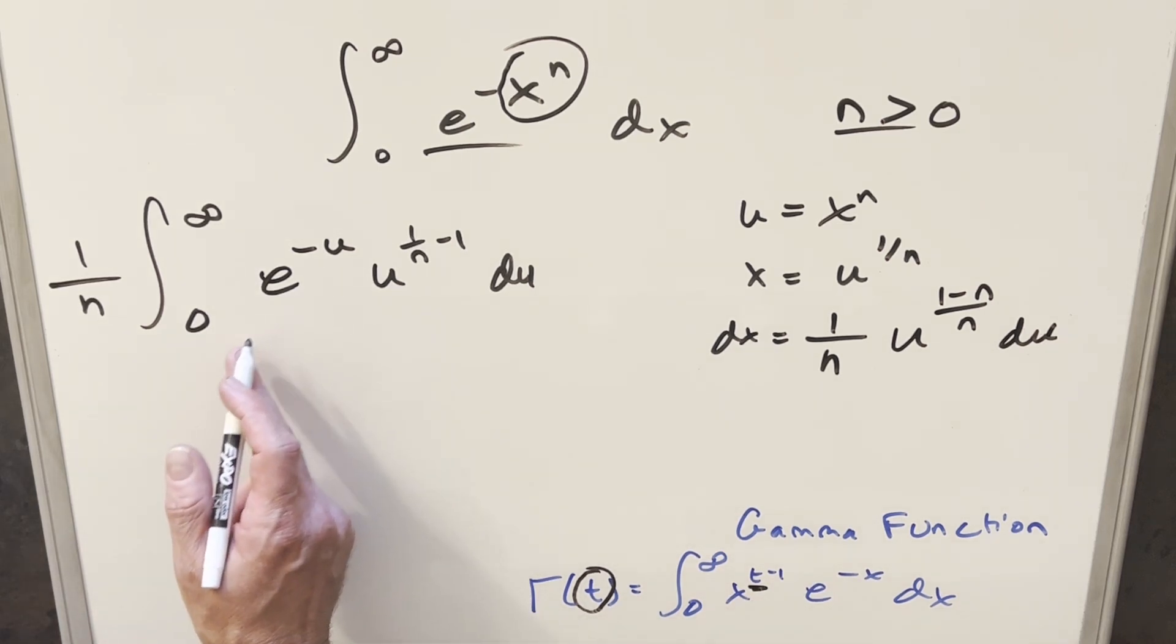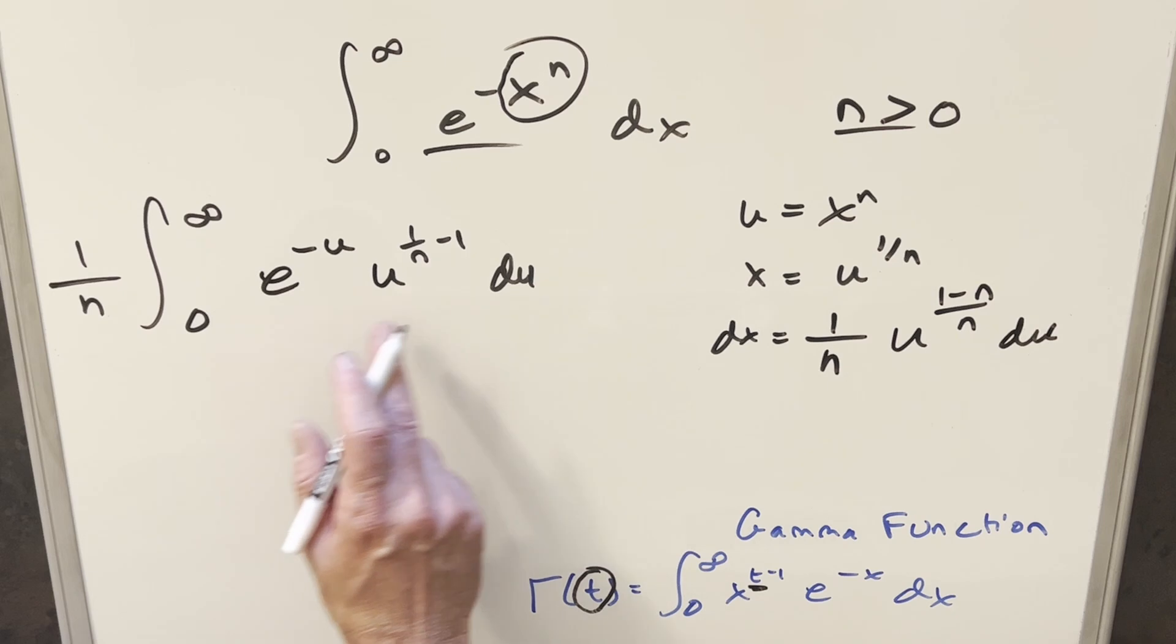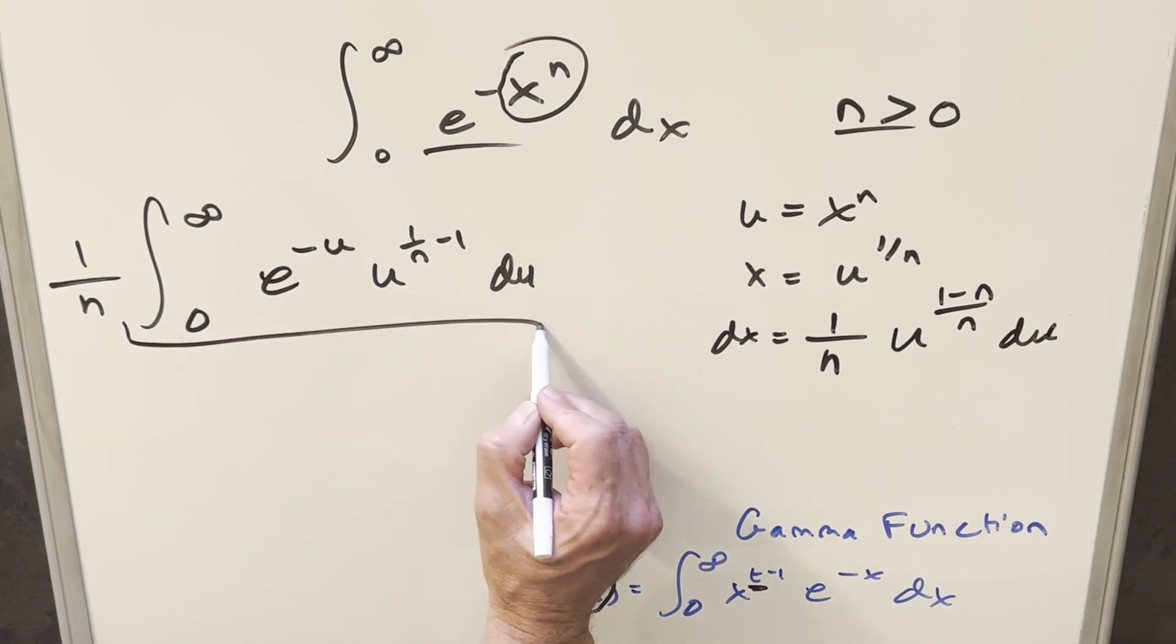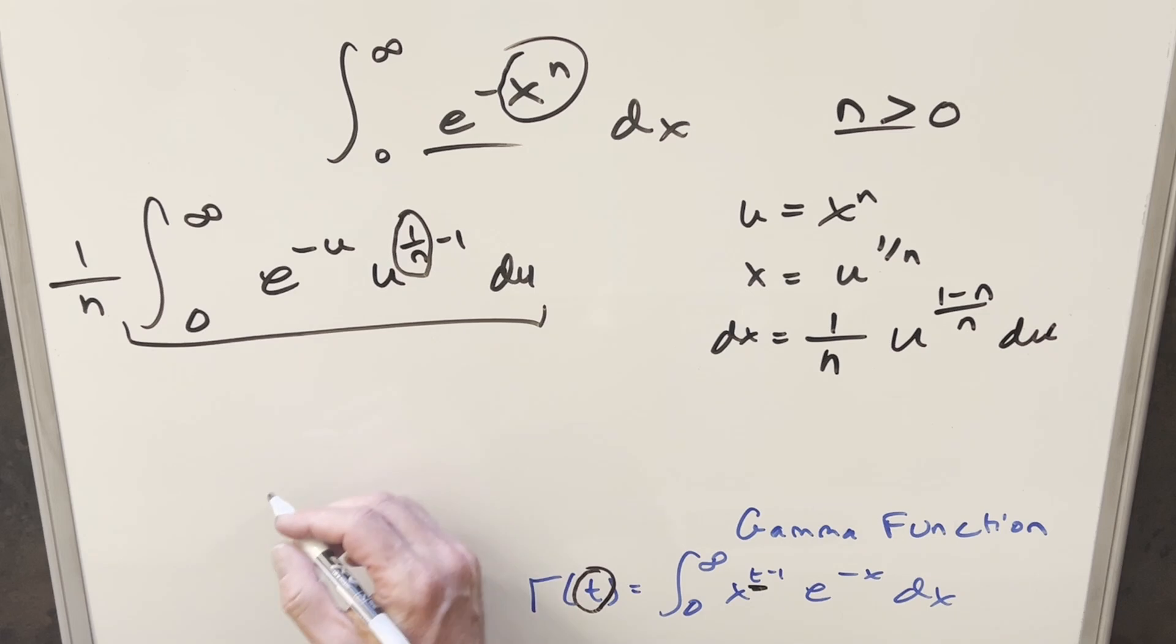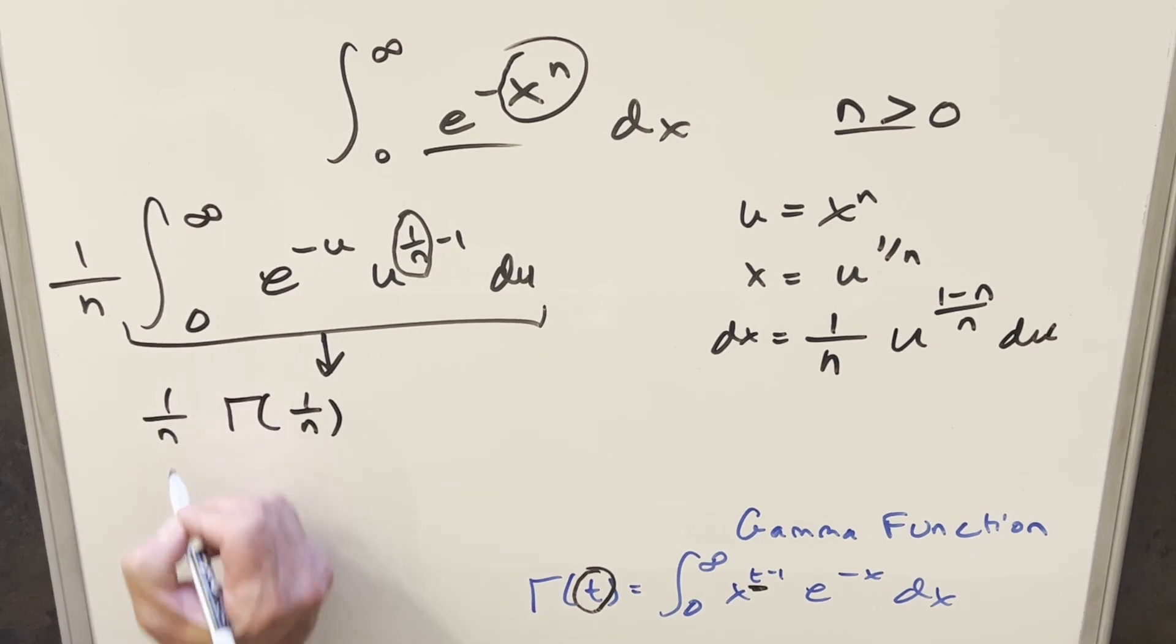Coming back to what we have here, we're integrating with respect to u, but this whole thing is going to be the gamma function with respect to the exponent here. So this is just the gamma function of 1/n, and we still have this 1 over n in front.